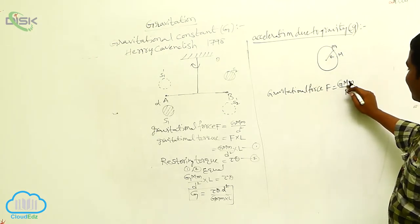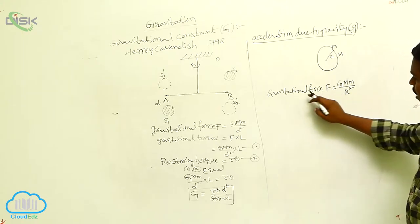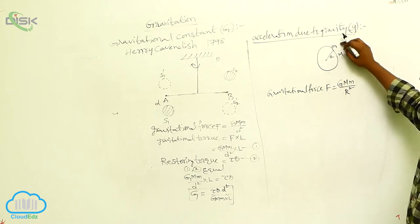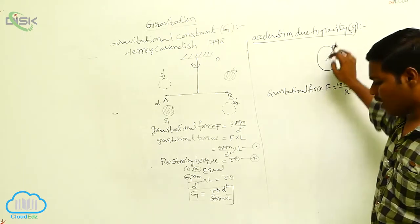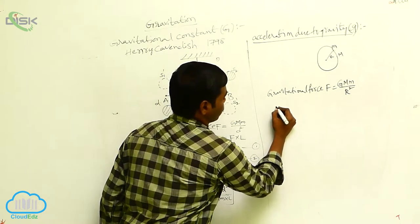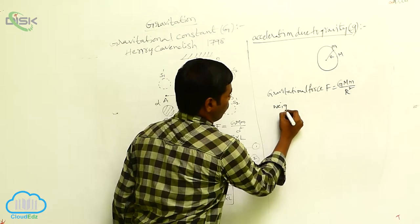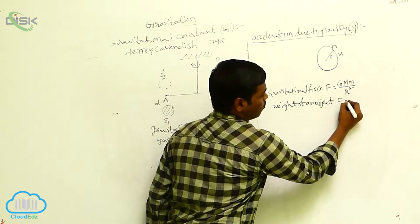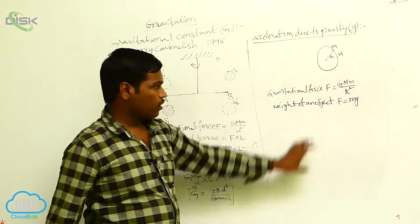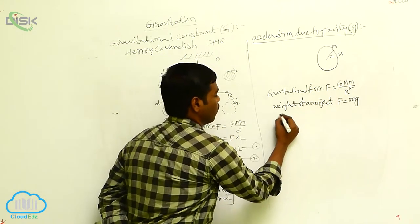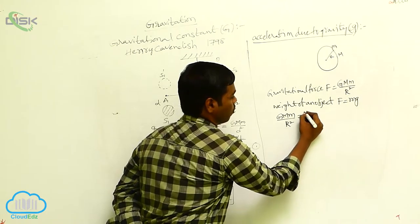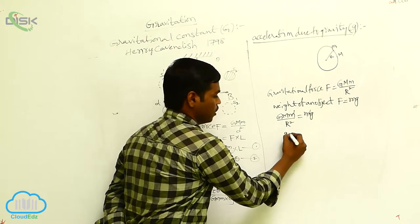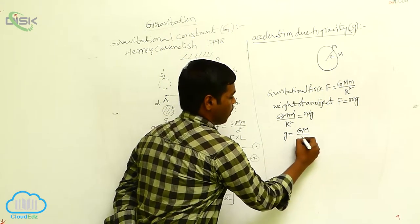The gravitational force F is equal to GMm by R square. Because of this gravitational force acting on small m, this gravitational force equals the weight of the object — that is F = mg. By equating these two equations, we will get GMm/R² = mg, and this m gets cancelled.